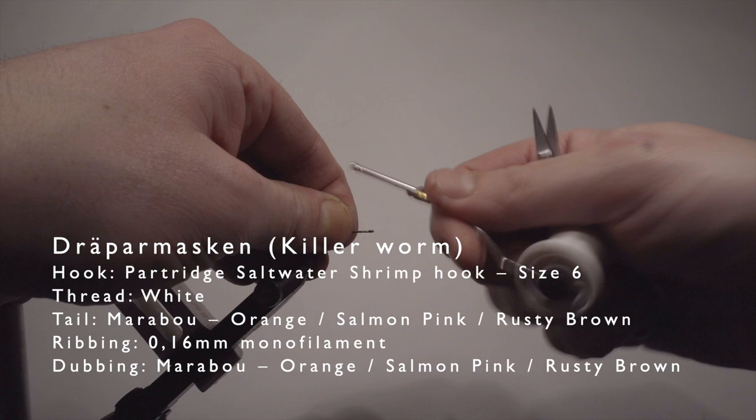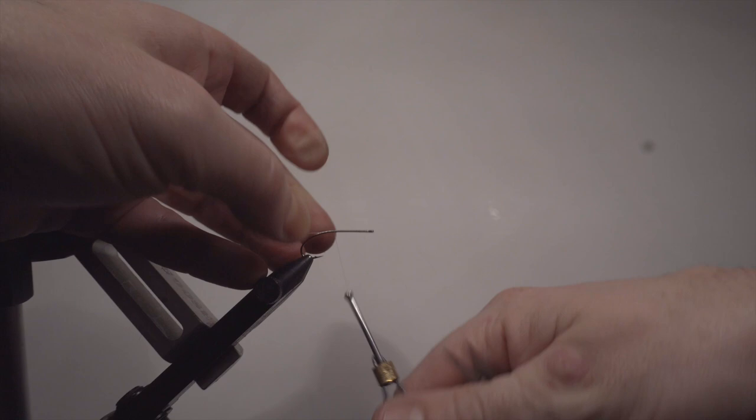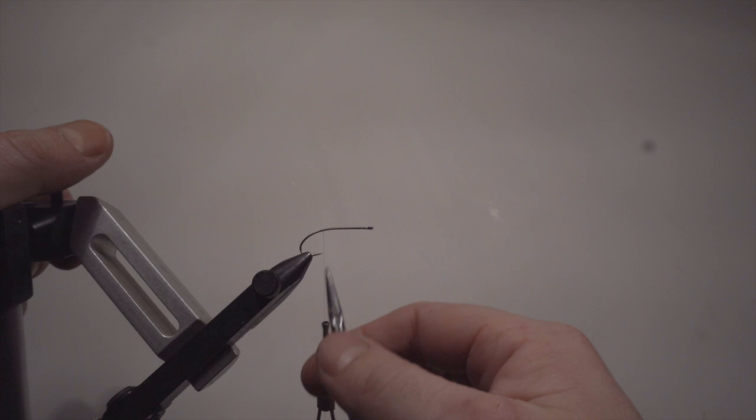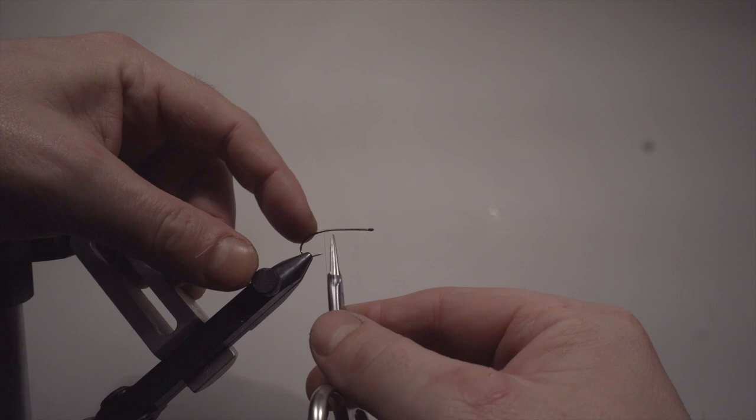The killer worm is going to be tied with a white thread since that's very easy to hide different light materials or the thread gets hidden easier in the material. When I'm tying on a hook fly, same as a double hook for salmon, where the natural bend of the hook comes, that's a good point to stop wrapping backwards.